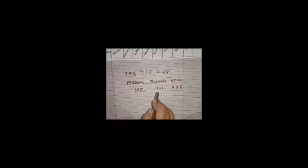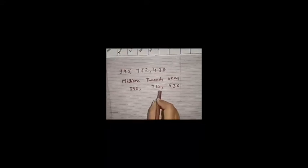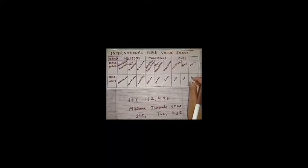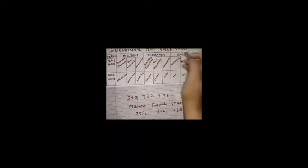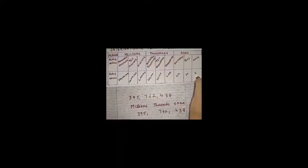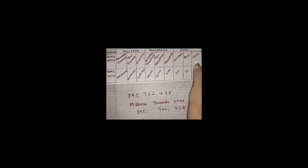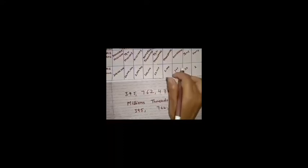So the number reads: three hundred ninety-five million, seven hundred sixty-two thousand, four hundred thirty-eight. One thing common in both Indian and international place value systems is the ones group — in both systems the ones group has three digits: units, tens, and hundreds.